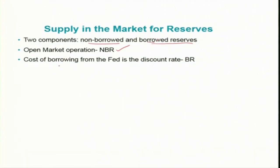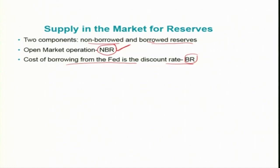The cost of borrowing from the Fed is the discount rate. The total reserve that the central bank injects into the economy through the banking system can be classified into two types. Non-borrowed reserve comes to member banks not by borrowing from the Federal Reserve System, but by selling government securities — whatever government securities they are holding, they sell some part to the Federal Reserve System, and in that way reserve comes to member banks. The second component is borrowed reserve, which depends on the willingness of member banks to borrow from the central bank.